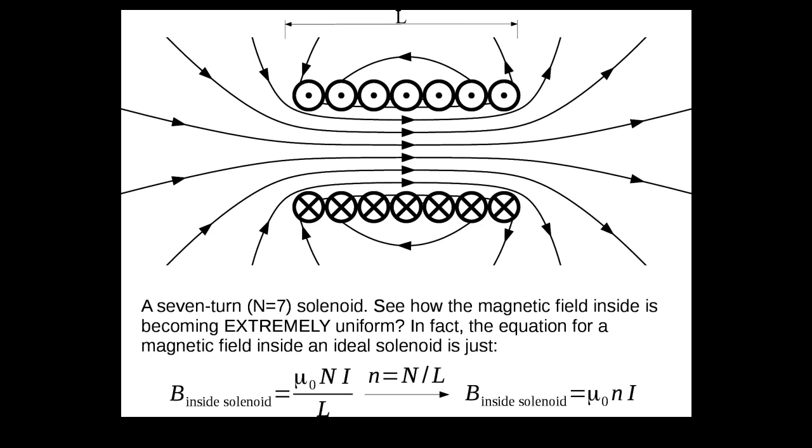Times the number of turns of wire, that's the capital N, times the current that's being driven through the wire. So N times I gives you the total current flowing through every one of the loops, sort of all added together.